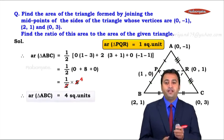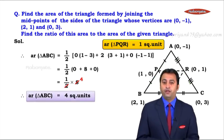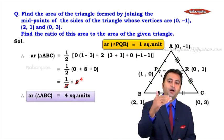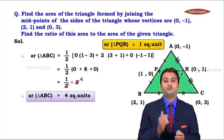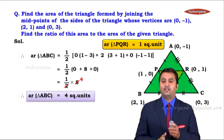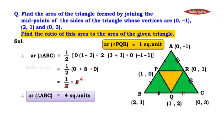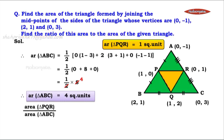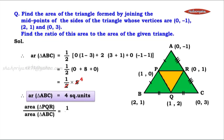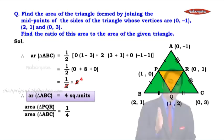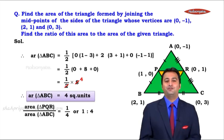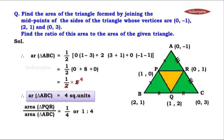Finally, we need the ratio. Ratio of area of triangle PQR to area of triangle ABC = 1/4. It is already in lowest form, so the ratio is 1 : 4.